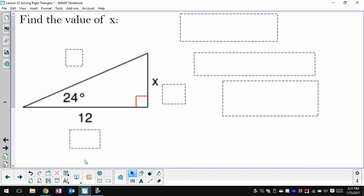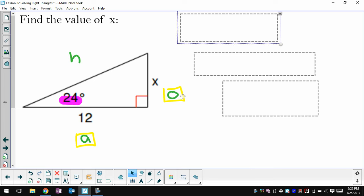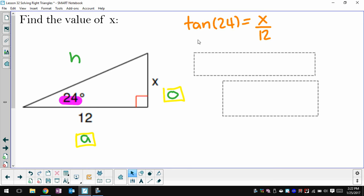So go ahead and pause here. Try this guy. If you can't get the final answer because you don't have a graphing calculator, get as far as you can. So here I'm going to label my sides as they relate to 24. So I have my opposite, my adjacent, and my hypotenuse. My opposite side is x, my adjacent side is 12, so that tells me to use the tangent.